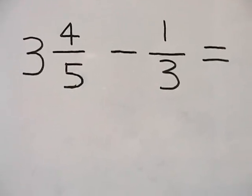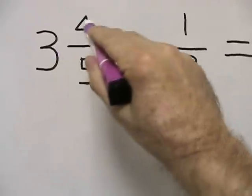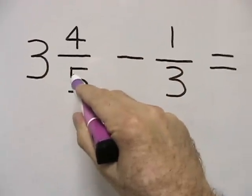For our next method, we're going to be working on the problem horizontally. Once again, we're going to take our mixed number of 3 and 4 fifths, turn it into an improper fraction.